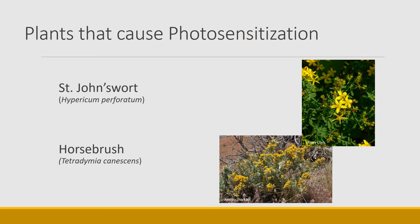Horsebrush is a plant that causes big head in sheep — I've seen this happen myself, where sheep eat horsebrush and their head swells. This plant re-sprouts after fire, so when a fire goes through, all the sagebrush may be removed and some of the first plants to come back might be horsebrush. That's where we tend to have problems with animals eating horsebrush, because there are no other shrubs available after fire.